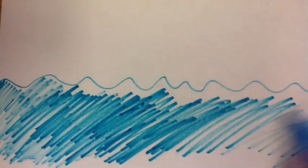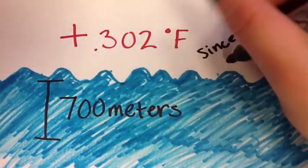The top 700 meters of the ocean have seen an increase in temperature of 0.302 degrees Fahrenheit since 1969.